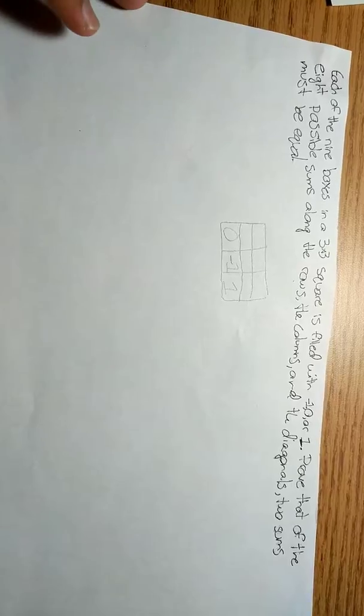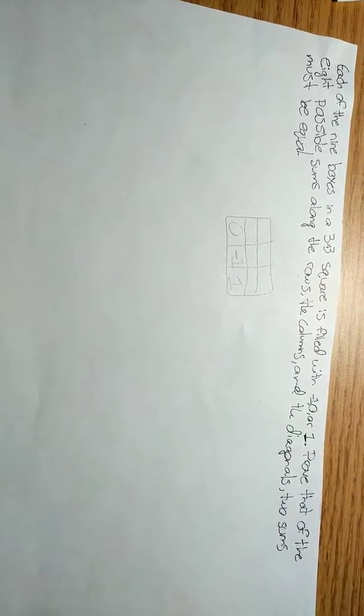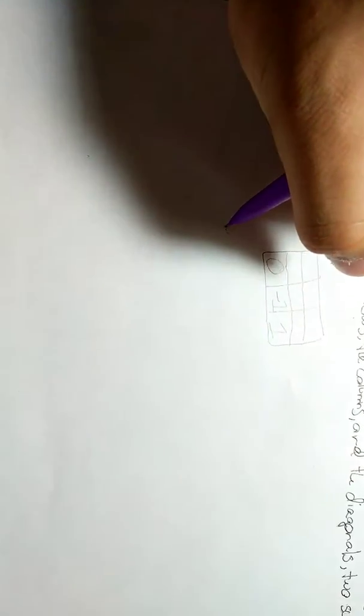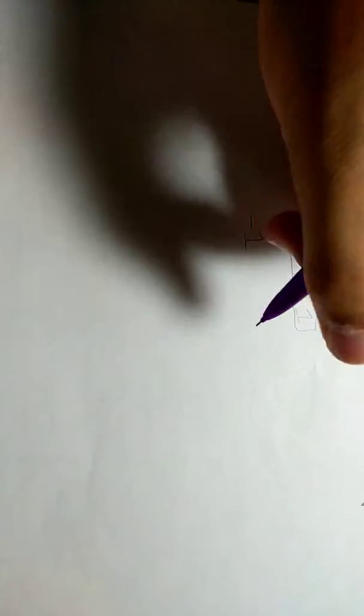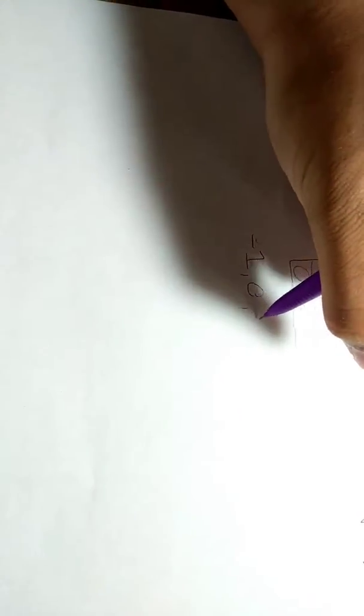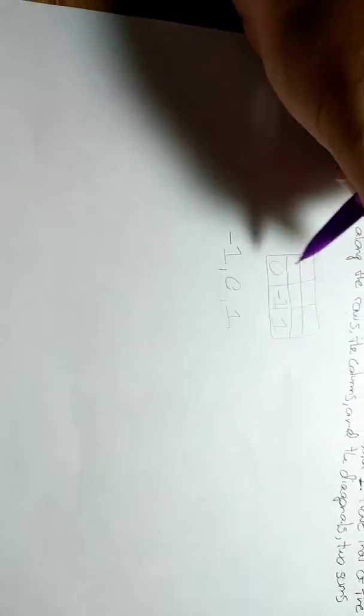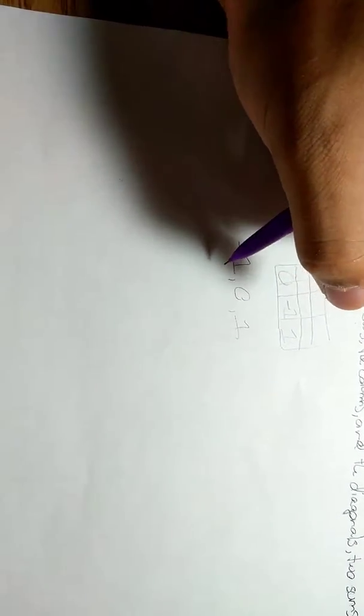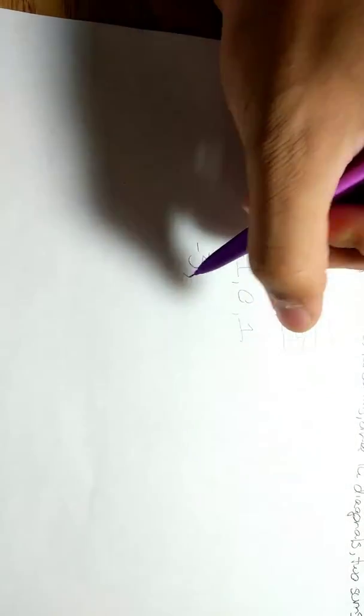I'm going to count the only possible sums. So we have the numbers negative 1, 0, and 1. We could have, in the diagonal, all three be minus 1, and we get a total of minus 3 there.